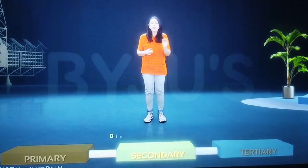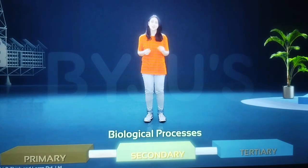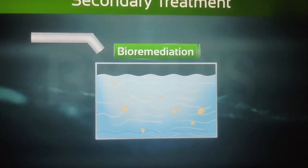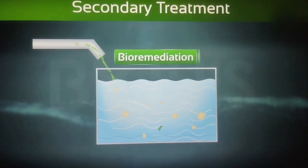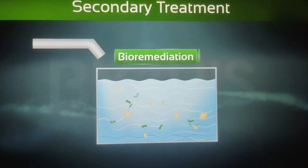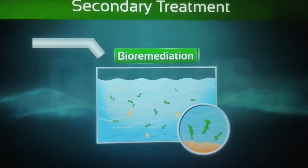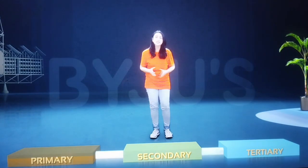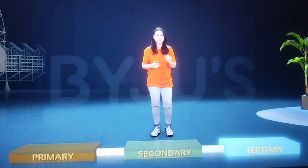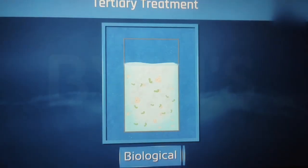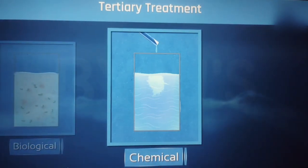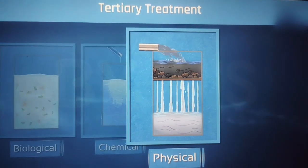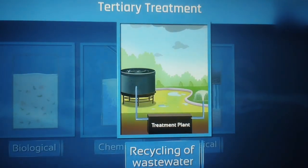Secondary treatment uses biological processes to treat the water. One of these processes includes bioremediation, in which living organisms are added to the waste to degrade or transform contaminants, reducing them to environmentally safe levels. After this, we move on to tertiary treatment, which can include biological, chemical, and physical processes, as well as recycling of waste water.